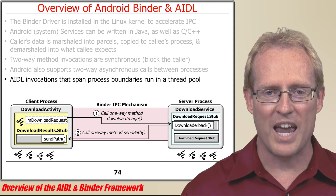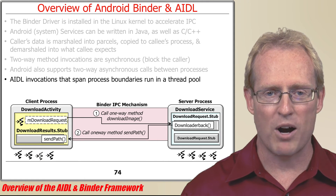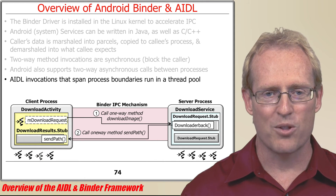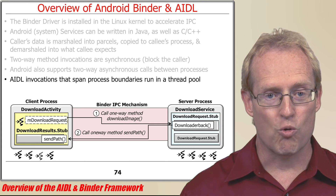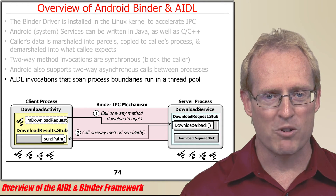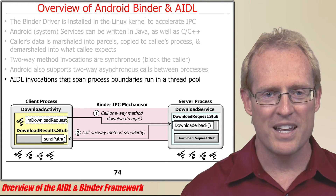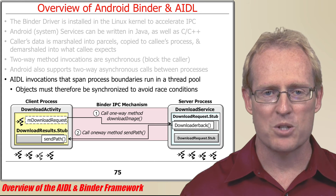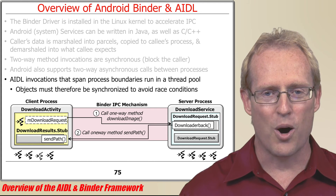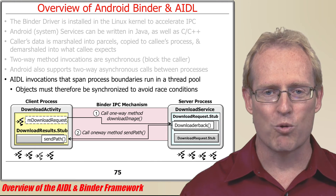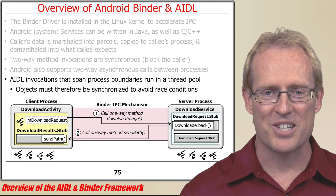Since AIDL invocations that span process boundaries are handled in threads from the binder's thread pool rather than from the user interface thread, application developers must ensure that any objects accessed via these calls are properly synchronized to avoid race conditions if they access shared state.